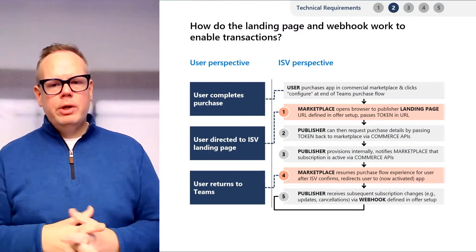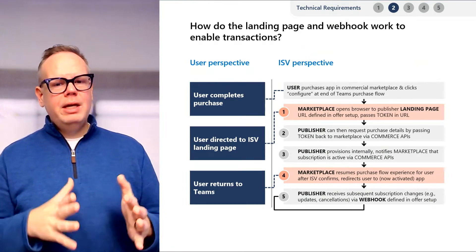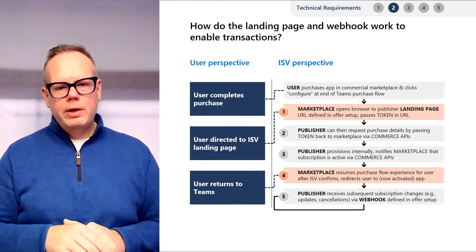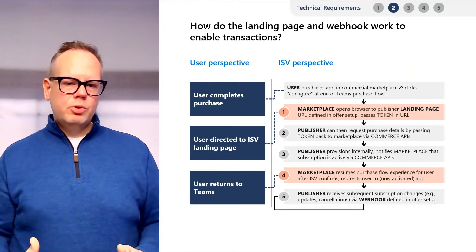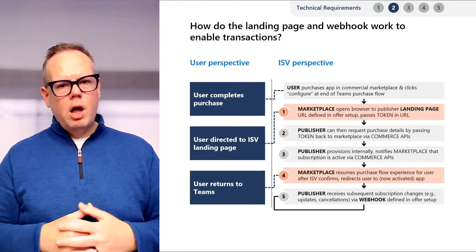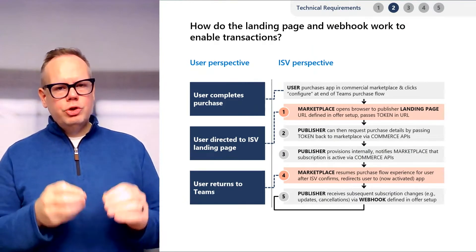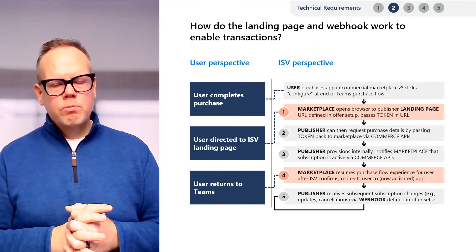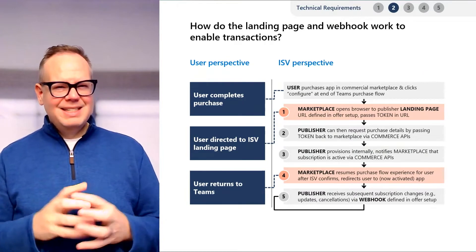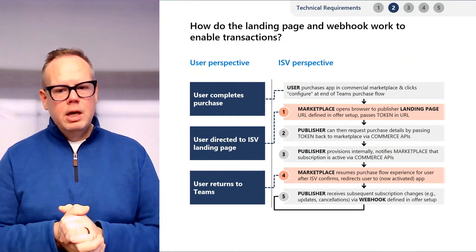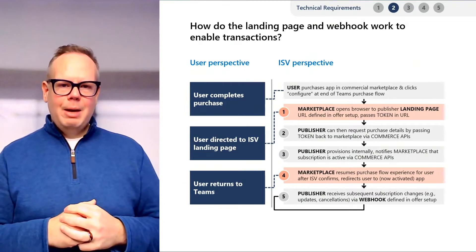Let's look at an example flow with a webhook and a landing page. A user completes their purchase through Teams and is presented with a configure button. Upon click, they're redirected to your landing page in a separate window. A token is passed in the URL; your landing page receives it and makes an API call to retrieve the subscription details. You then provision any required services and send an acknowledgement back to the commerce system that the subscription is active. Any additional subscription changes are passed back through the webhook from our commerce APIs. Note that single sign-on is required — your app must use Azure Active Directory on both your landing page and within your Teams app.